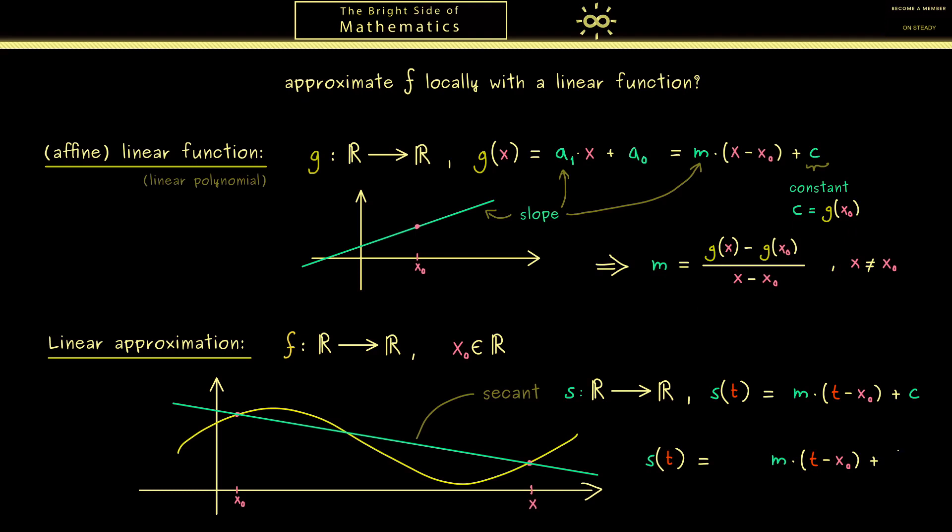c is the value of s at x0 which is the same as f(x0). And similarly we can put in the slope as (f(x) minus f(x0)) divided by (x minus x0).